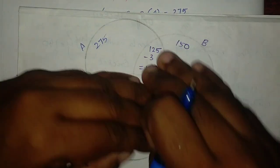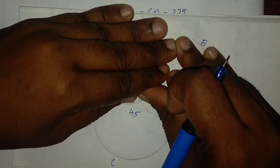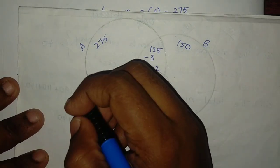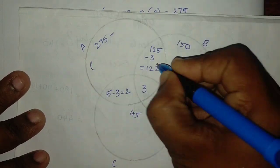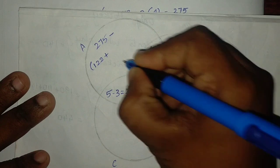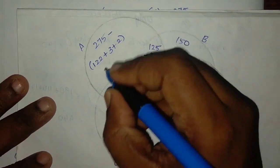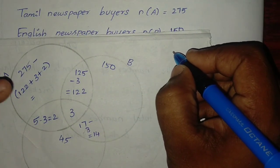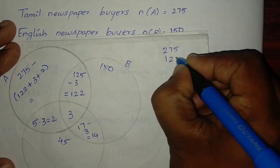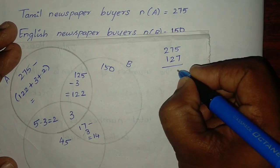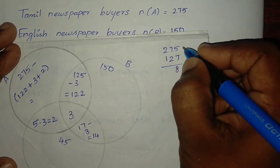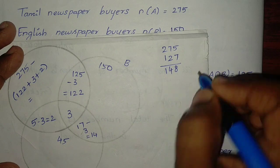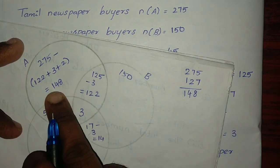Only A equals 275 minus (122 plus 3 plus 2) equals 275 minus 127 equals 148. So 148 families read only Tamil newspaper. The answer for only Tamil is 148.